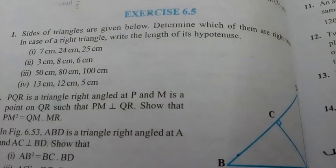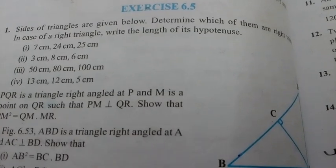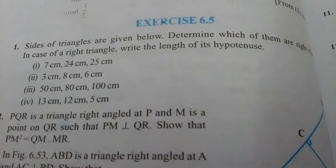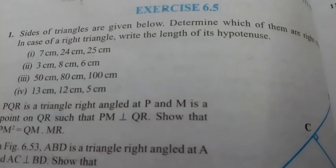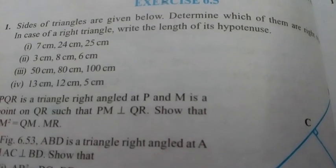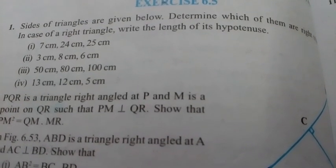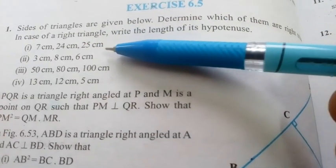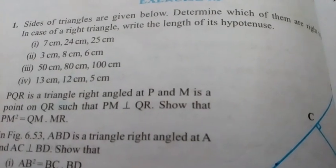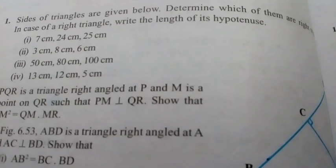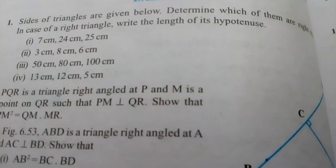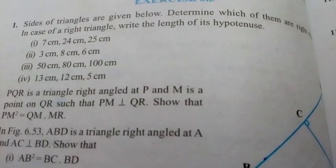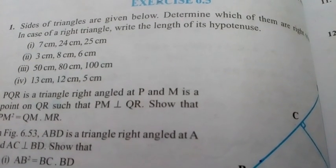Exercise 6.5 of chapter Triangles: sides of the triangle are given below. Determine which of them are right triangles. In case of a right triangle, write the length of the hypotenuse. We know that the hypotenuse is the longest side of a triangle. Therefore, for question number 1, the sides are 7, 24, and 25 — so the hypotenuse equals 25. We check whether this is a right triangle.